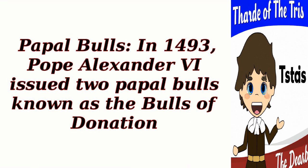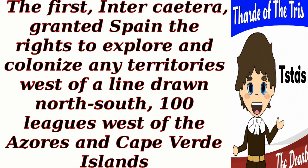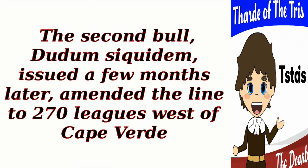Papal Bulls: In 1493, Pope Alexander VI issued two papal bulls known as the Bulls of Donation. The first, Intercaetera, granted Spain the rights to explore and colonize any territories west of a line drawn north-south, 100 leagues west of the Azores and Cape Verde Islands. The second bull, Dudum Siquidem, issued a few months later, amended the line to 270 leagues west of Cape Verde.